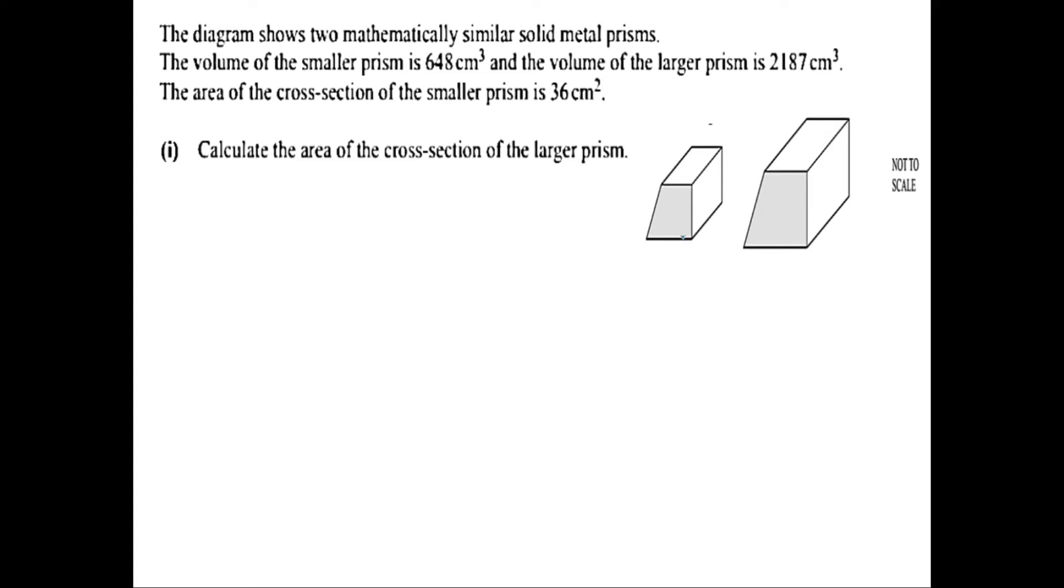Starting with the given data, the volume of the smaller prism V1 equals 648. The volume of the larger prism V2 is 2187 cm³. Both units are cm³.